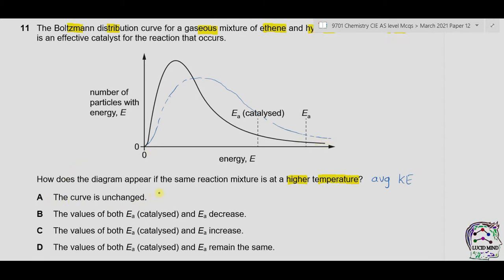Part A: the curve is unchanged — this is incorrect because temperature changes the shape of the curve; it is a catalyst that does not change the shape. Part B: the values of both EA catalyzed and EA decrease — incorrect, temperature has no effect on activation energy. Part C: both EA values increase — also incorrect, temperature does not affect activation energy. Part D: both EA catalyzed and EA remain the same — this is true because we are only changing the temperature. Answer is D.